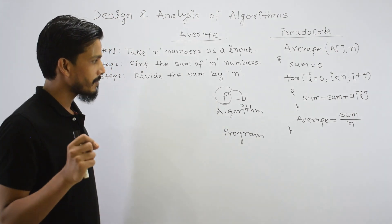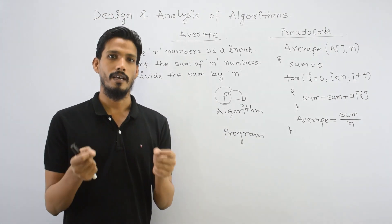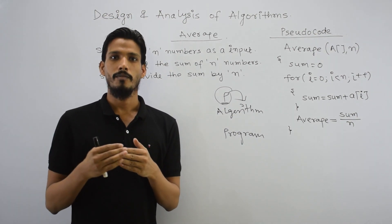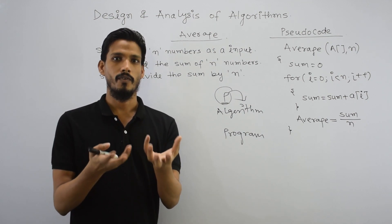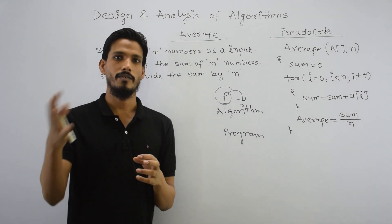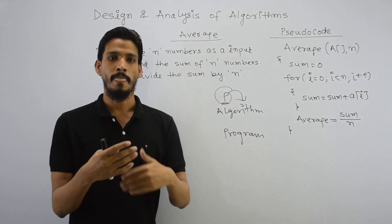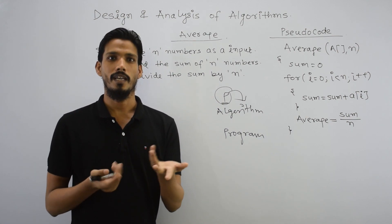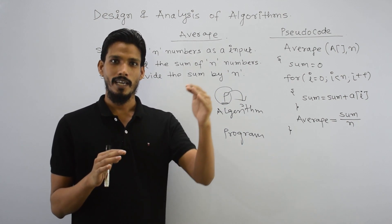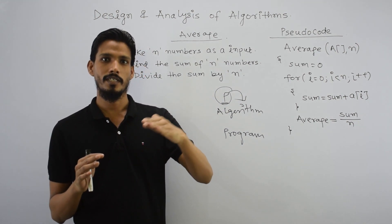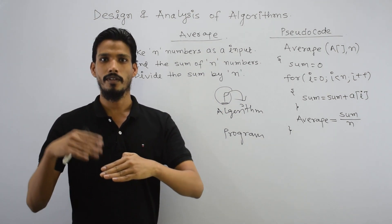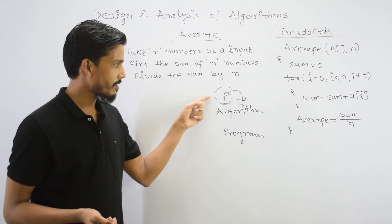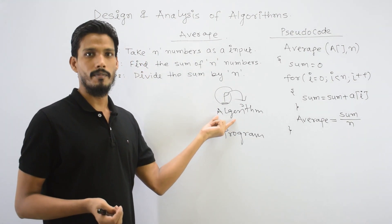In a real-life example, we can elaborate what an algorithm is. Think about making a recipe — what do we do? First, we take water, then we boil it, then we mix ingredients, and then we eat. There is a sequence order — step by step. What is the instruction? What is the sequence? This is what an algorithm is — it is a blueprint.